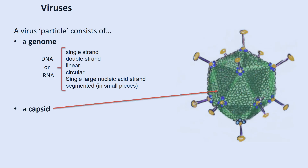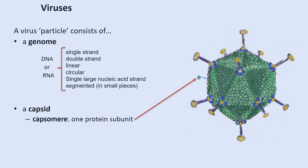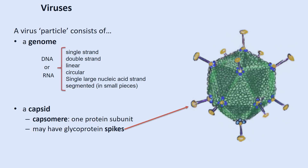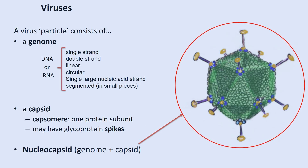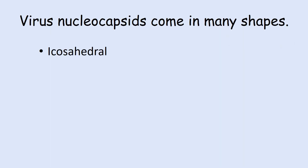Every viral genome is surrounded and protected by a protein coat called a capsid, and these capsids are composed of multiple copies of one or more protein subunits called capsomeres. Sometimes these capsids contain spikes made of glycoproteins — proteins that are covalently bonded to carbohydrates. Together, the genome and the capsid are collectively called the nucleocapsid. At the very least, every virus has a nucleocapsid. These nucleocapsids come in different shapes, which helps us classify the viruses.